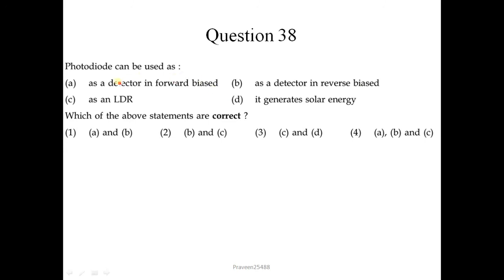Question number 38: photodiode can be used as — as a detector in forward bias: no, photodiode acts as a detector in reverse bias, so that is correct. As an LDR (light dependent resistor) — this is also correct, as photodiode is used in LDR applications. Heat generates solar energy — this is not correct. So B and C are correct; the second option is correct.